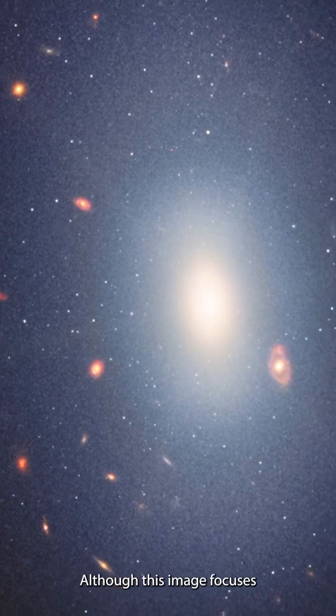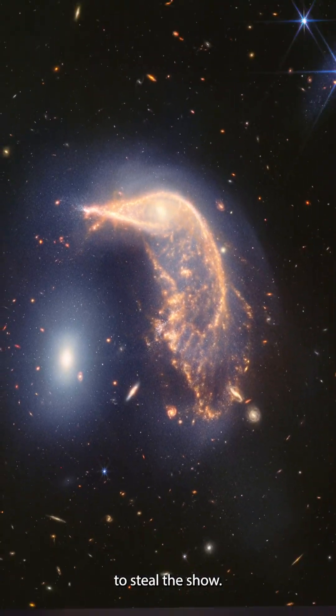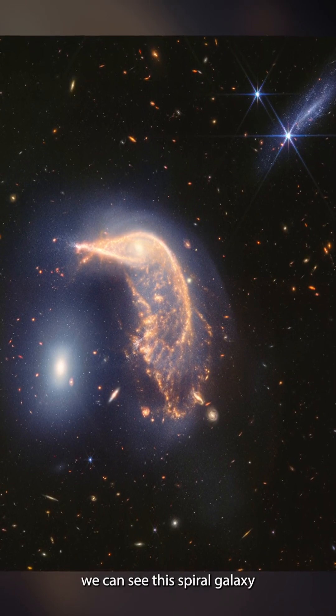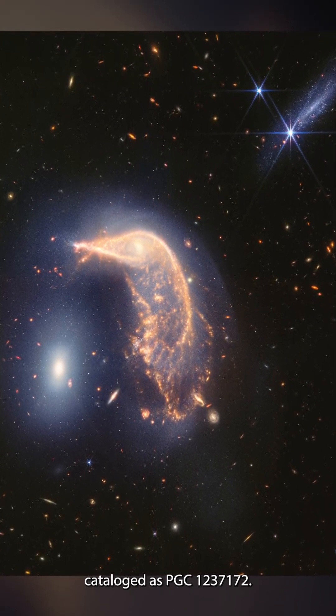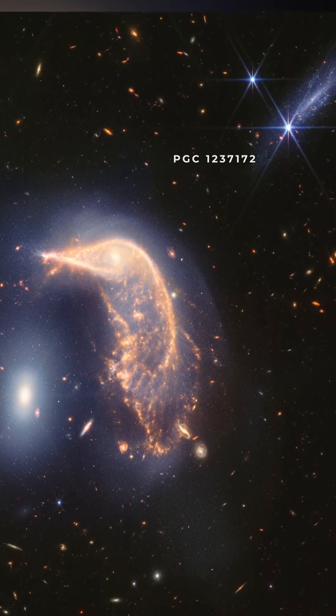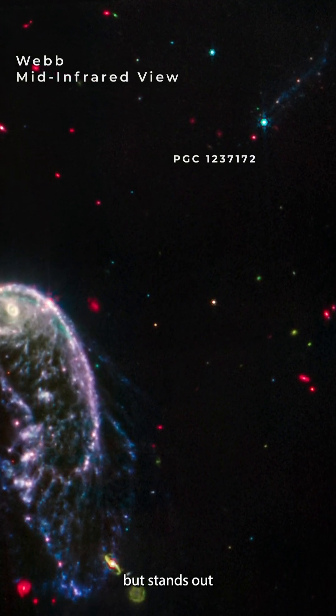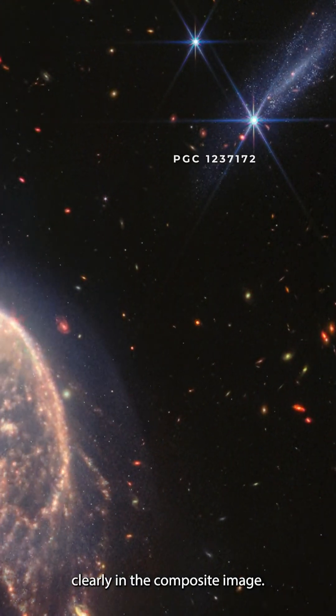Although this image focuses on two distinct galaxies, a third galaxy attempts to steal the show. In the top right, we can see the spiral galaxy cataloged as PGC 123-7172. This galaxy was barely visible in the mid-infrared image alone, but stands out clearly in the composite image.